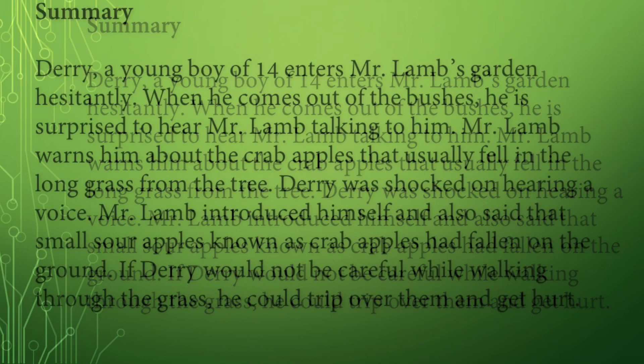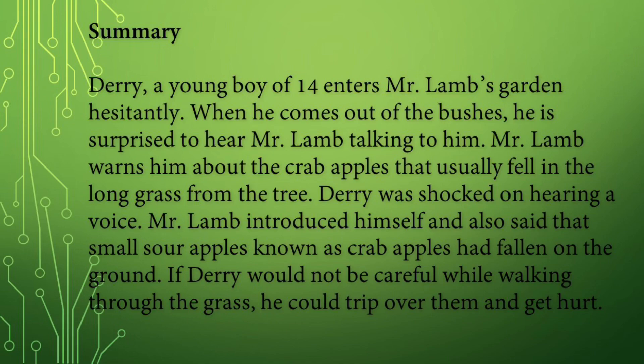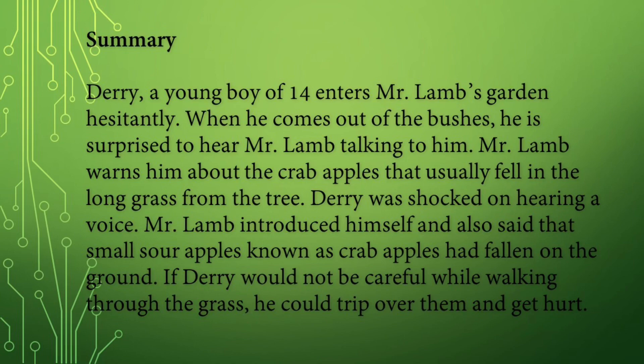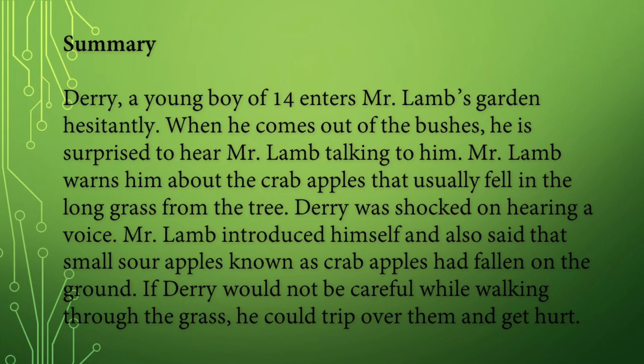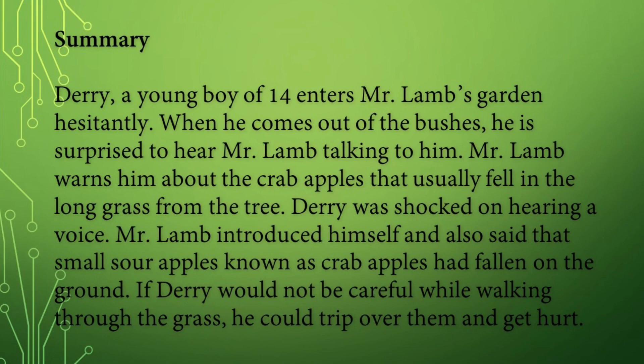Summary: Derry, a young boy of 14, enters Mr. Lamb's garden hesitantly. When he comes out of the bushes, he is surprised to hear Mr. Lamb talking to him. Mr. Lamb warns him about the crab apples that usually fell in the long grass from the tree. Mr. Lamb introduced himself and said that if Derry was not careful while walking through the grass, he could trip over the small sour crab apples and get hurt.